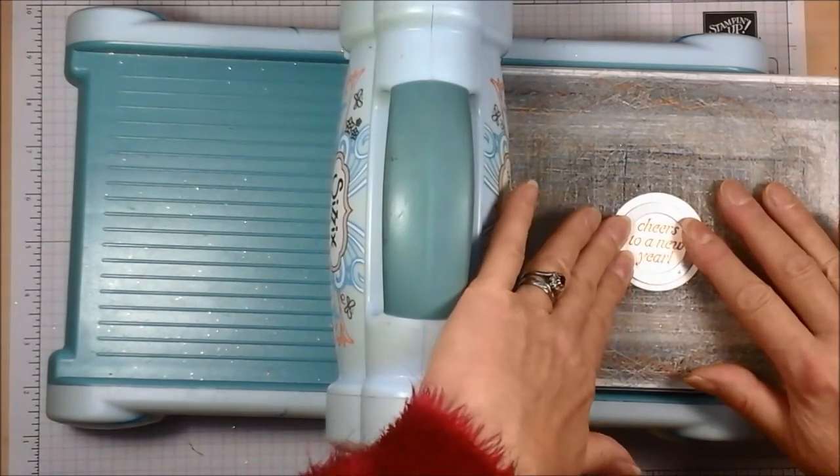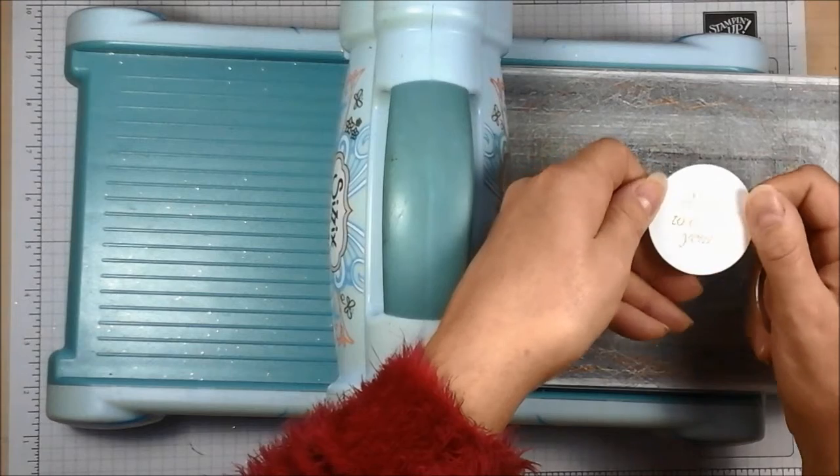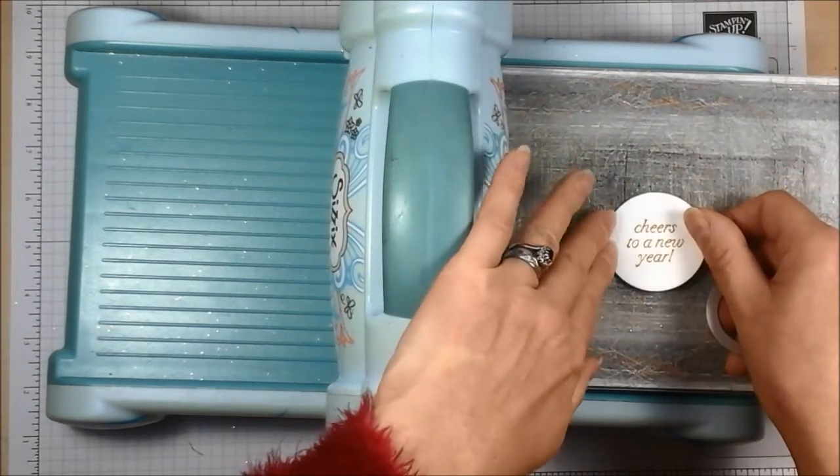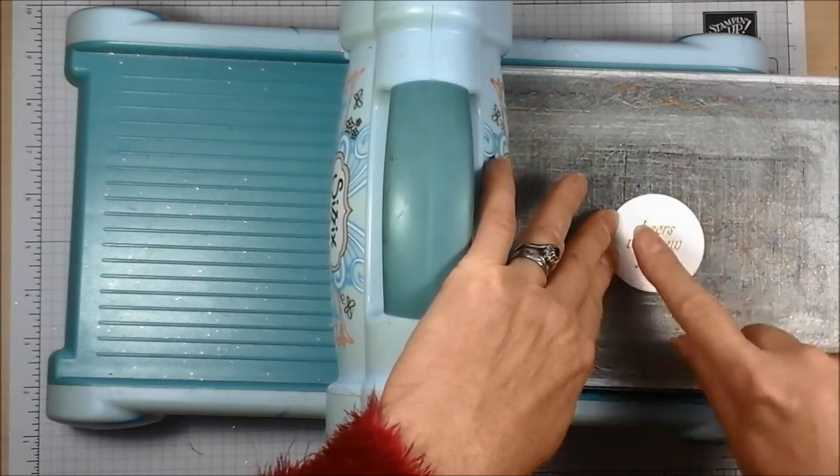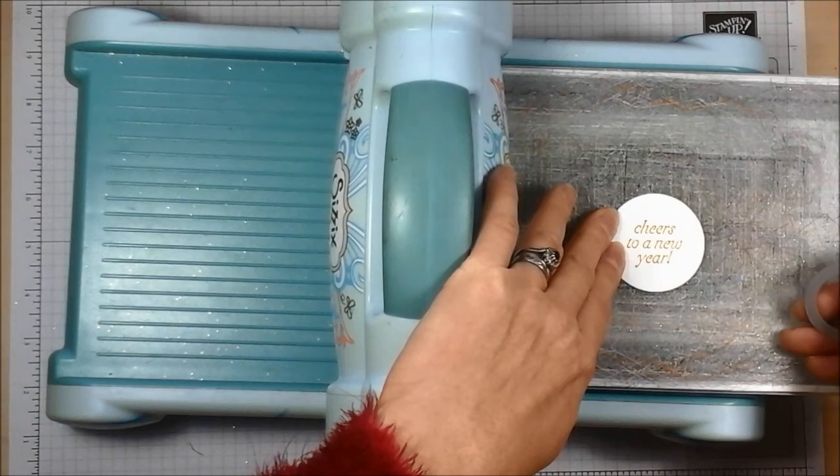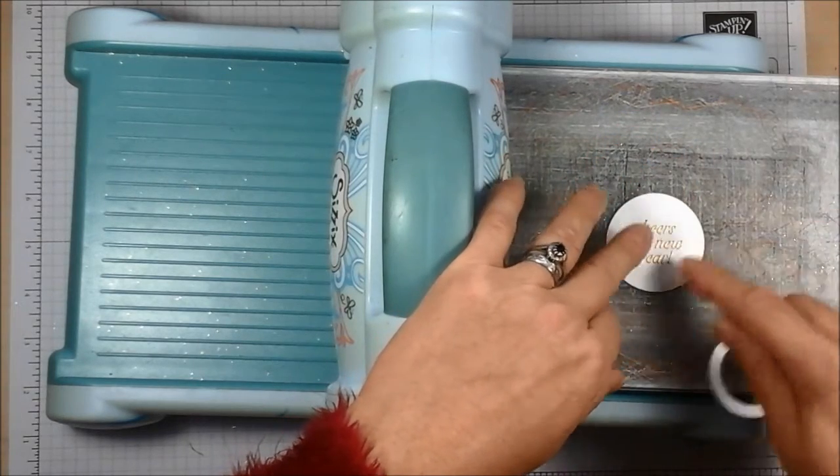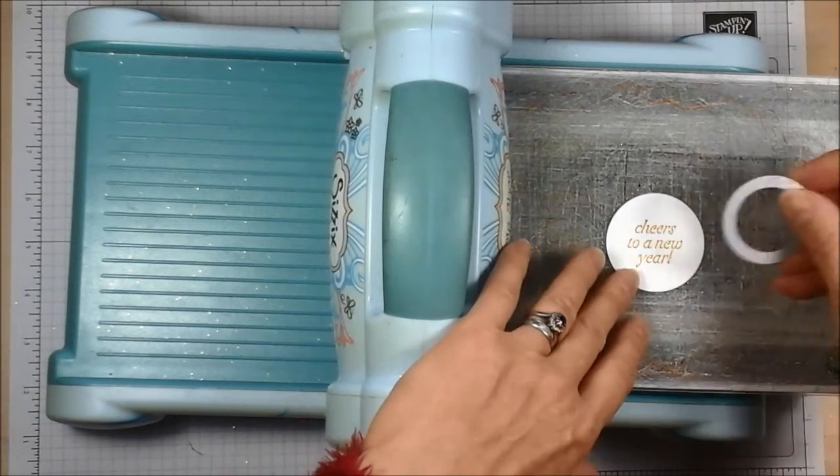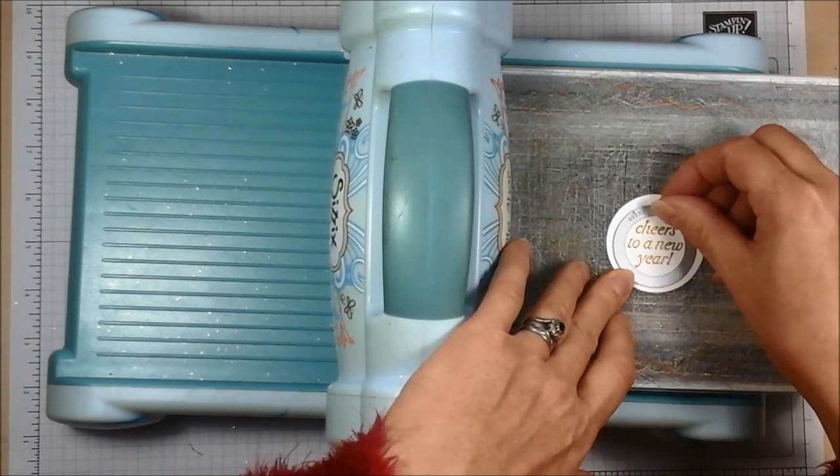So now I have here a piece of thick whisper white card. It's been wiped with an embossing buddy and then this sentiment, cheers to the year, cheers to a new year, has been stamped using Versamark ink, gold embossing powder sprinkled over the top, then all the excess tapped off, any stray bits removed and then embossed using the heat tool on high, which is number two.